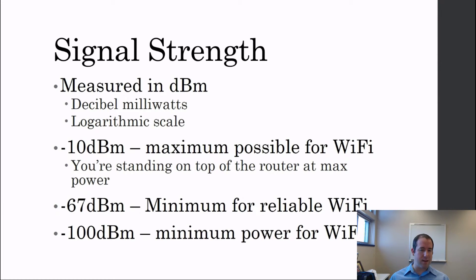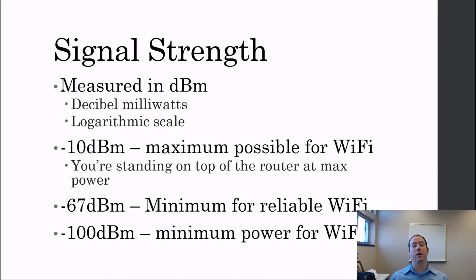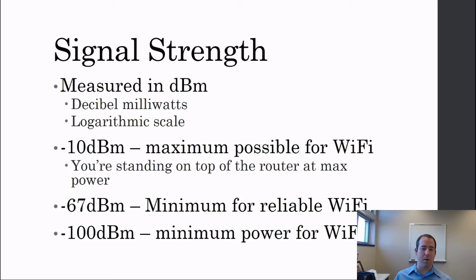Signal strength is measured in decibel milliwatts (dBm), and it's important with wireless. If you have a weak signal — just one tiny WiFi bar — you won't communicate very effectively; you'll lose a lot of information and drop packets. Negative 10 dBm is the maximum possible — basically standing on top of a router at max power, which you'll probably never see. Negative 67 dBm is the minimum for reliable WiFi; below that you get a shaky signal where you're losing things. Negative 100 dBm means basically no signal.